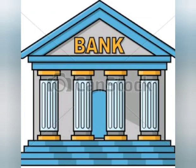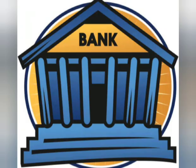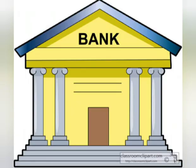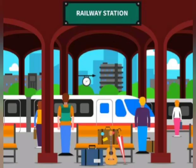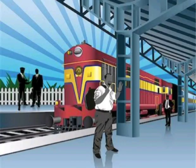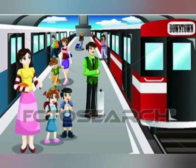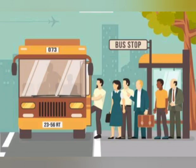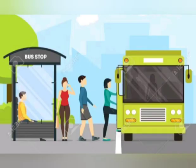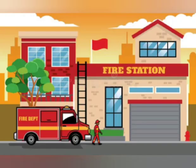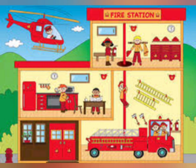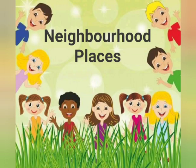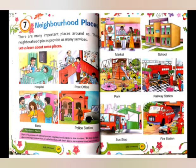Bank is a safe place to keep our money. We can take out our money from the bank whenever we need it. Railway Station is a neighborhood place where people board the train to travel from one place to another by purchasing tickets. Bus Stop is a place where buses stop for passengers to travel from one place to another. Fire Station is a place where we can see fire brigades, which are used at the time of fire incidents happening anywhere around. All these are neighborhood places — places which are near to us and provide us many services.